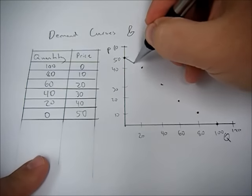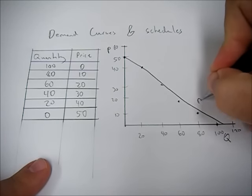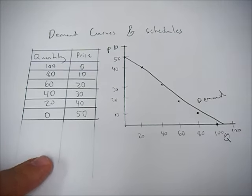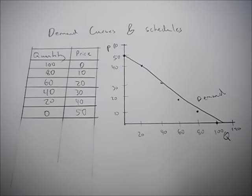Now, to get the demand curve, we just connect those dots. Close enough. I'm not an artist. And we get our demand curve. Pretty simple. It's downward sloping. It makes sense. That's how you translate a demand curve from a demand schedule.